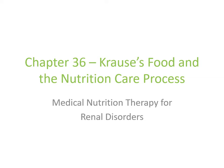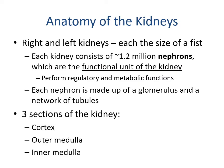We'll now begin our review of Medical Nutrition Therapy for Renal Disorders. Let's talk about the anatomy of the kidneys. You have two kidneys, the right and left kidney, each approximately the size of a fist. If you make your fist and place them right above the small of your back, that's approximately the location of each kidney. Each kidney consists of 1.2 million nephrons, the smallest functional unit of the kidney.